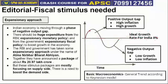In the boom period — which we also call the positive output gap period — the growth rate is high, but at the same time it is associated with high inflation. Therefore, it is not good in the long run, because high inflation in the long run will have a negative impact on the overall economy. It will impact saving and thus investment and growth. So this boom period is also not considered ideal.